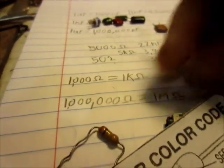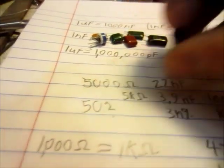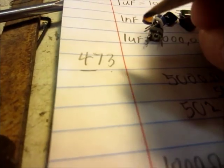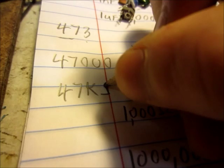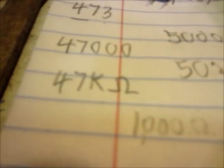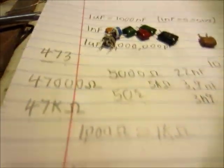We'll do another one. This one, the number is 473. So these two are the digits, and this one is the multiplier. We have 47 and 1, 2, 3 zeros. And we can make it to 47 kiloohms. Pretty simple.